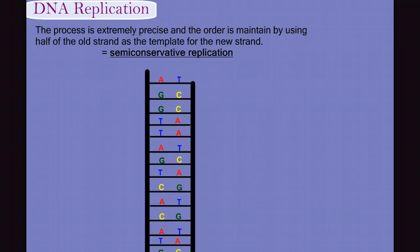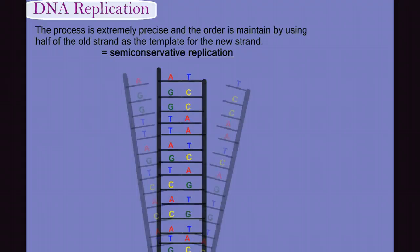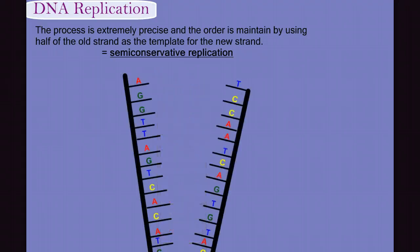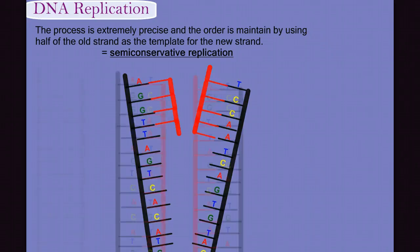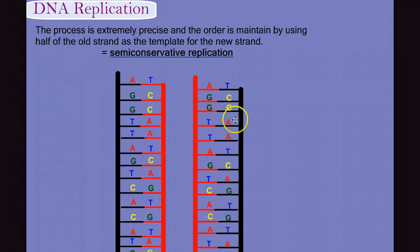So a quick recap will again highlight the semi-conservative nature of this process. We start with our original ladder. We separate the strands, bring in complementary nucleotides, which I've drawn in red here. And as we continue the process, we can see that instead of building a whole new DNA molecule, we're actually conserving half of the original molecule and building only a second new half. So that each strand is half old material, black, and half new material.